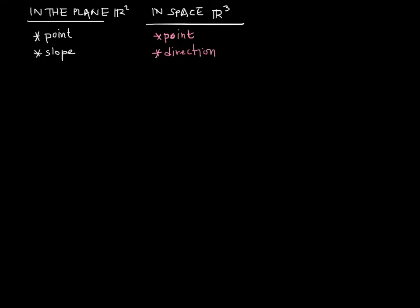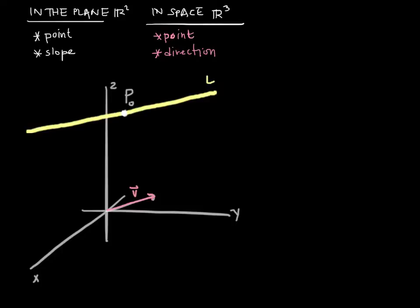Let's take a closer look. Say we want to make the line that goes through this particular point, which we will call p-naught, and we want it to point in the same direction as this vector, which we'll call v. The line that goes through p-naught and points in the direction of v looks something like this. I'll call it L.